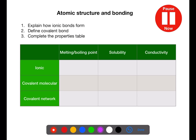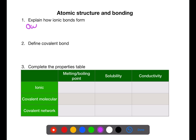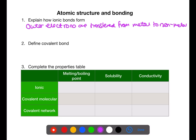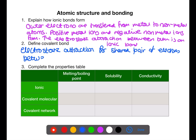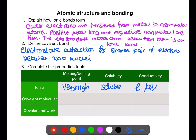Pause the video now and explain how ionic bonds form, define a covalent bond, and complete the properties table. Outer electrons are transferred from metals to non-metals — this creates a positive metal ion and a negative non-metal ion, and the electrostatic attraction between them is an ionic bond. A covalent bond is the electrostatic attraction for a shared pair of electrons between two nuclei. Ionic compounds have very high melting and boiling points because there are a lot of ionic bonds which need to be broken. They tend to be soluble in water and conduct electricity when liquid or aqueous because the ions are free to move and carry charge.